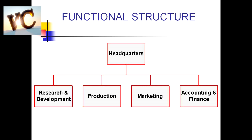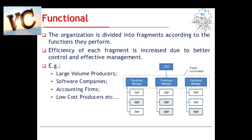Job activities ko aap dimag mein rakh ke function ke hisaab se divide karte ho — unki job kya hogi us hisaab se divide karte ho. Jaise ki production ka kya hai, marketing mein kya hai, finance mein kya hai, purchase mein kya hai — is case mein aap divide karoge. Ab dekho, production wala department in baaton ka dhyan rakhega: processing dhang se ho rahi ki nahi, quality.